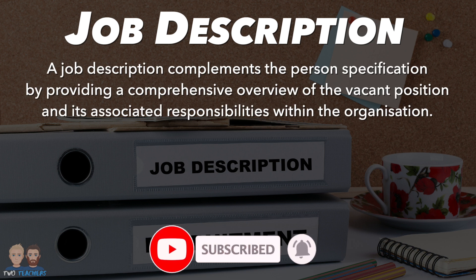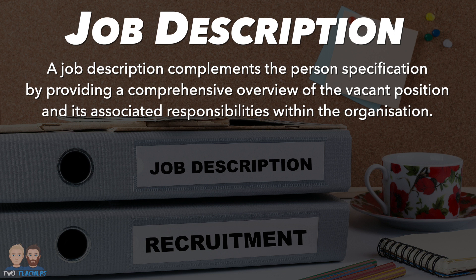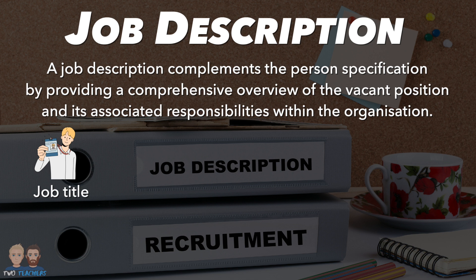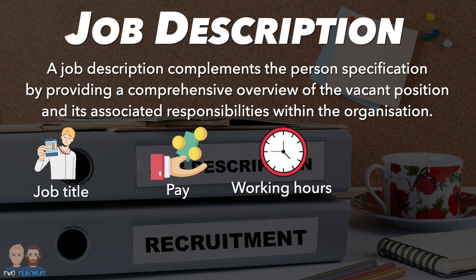The job description complements the person specification by providing a comprehensive overview of the vacant position and its associated responsibilities within the organisation. While the person specification focuses on the qualifications and attributes of the ideal candidate, the job description outlines the role itself. A typical job description includes the job title — the official title of the position such as marketing manager or team leader — the salary range or hourly rate, any performance-based bonuses or incentives, and the expected working hours including regular business hours, overtime expectations, or shift work.